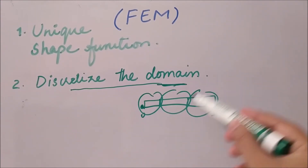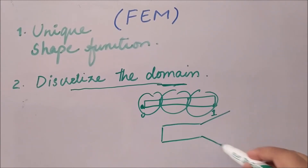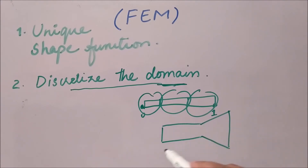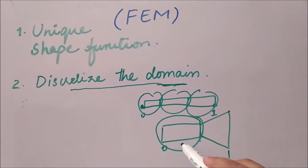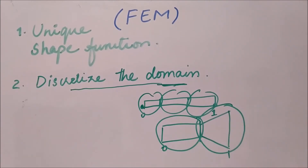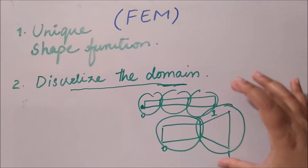For example, if we are dealing with a funnel shape, we have to discretize the domain from zero to one. The first portion would be the first element and the second portion would be the second element, on a broad level. That is why we discretize the domain into more than one element according to the geometry.